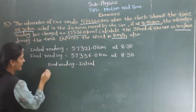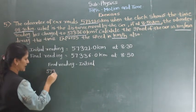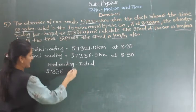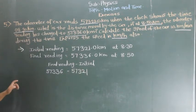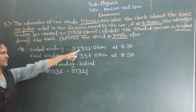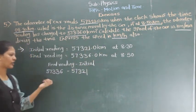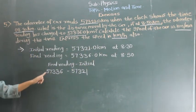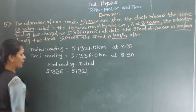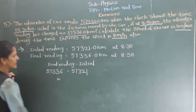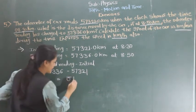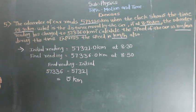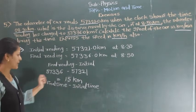So what is this? 57,336 minus 57,321. When you solve this, the answer is 15 km — wait, the answer comes to 50 km. So the distance covered is 50 km.